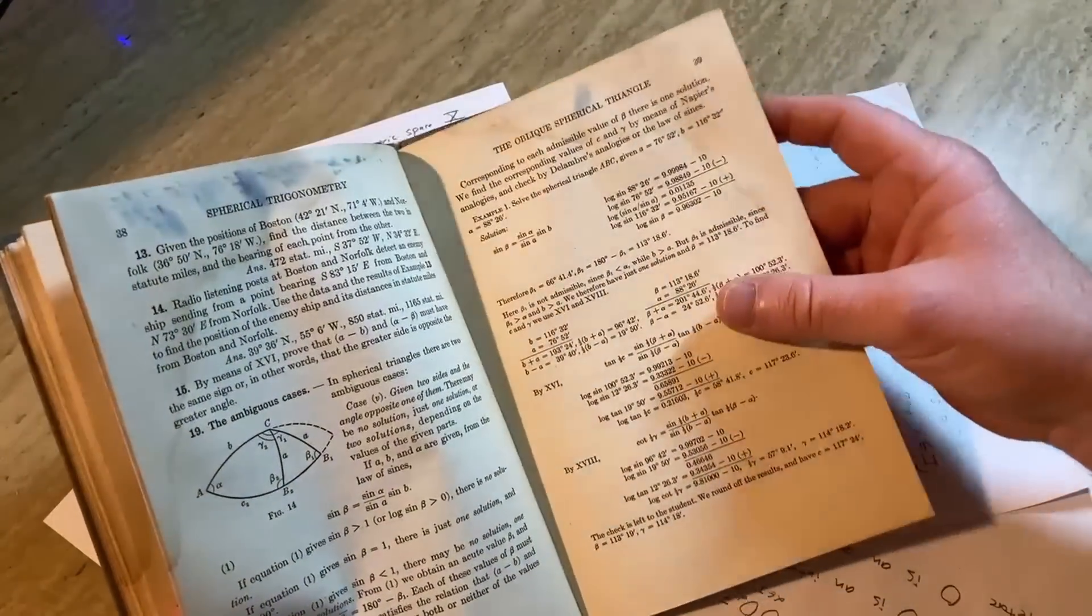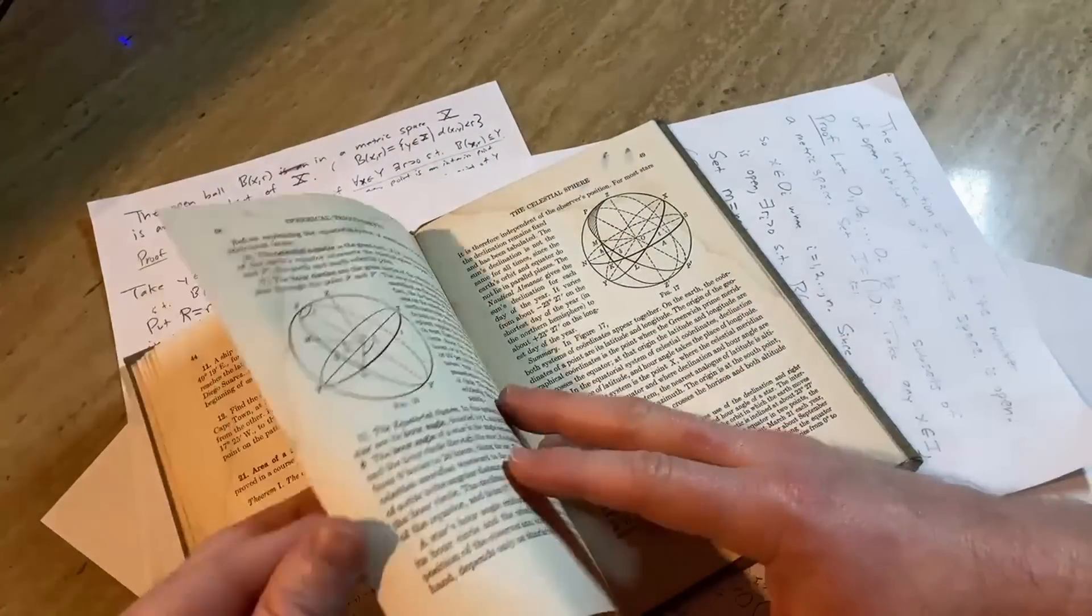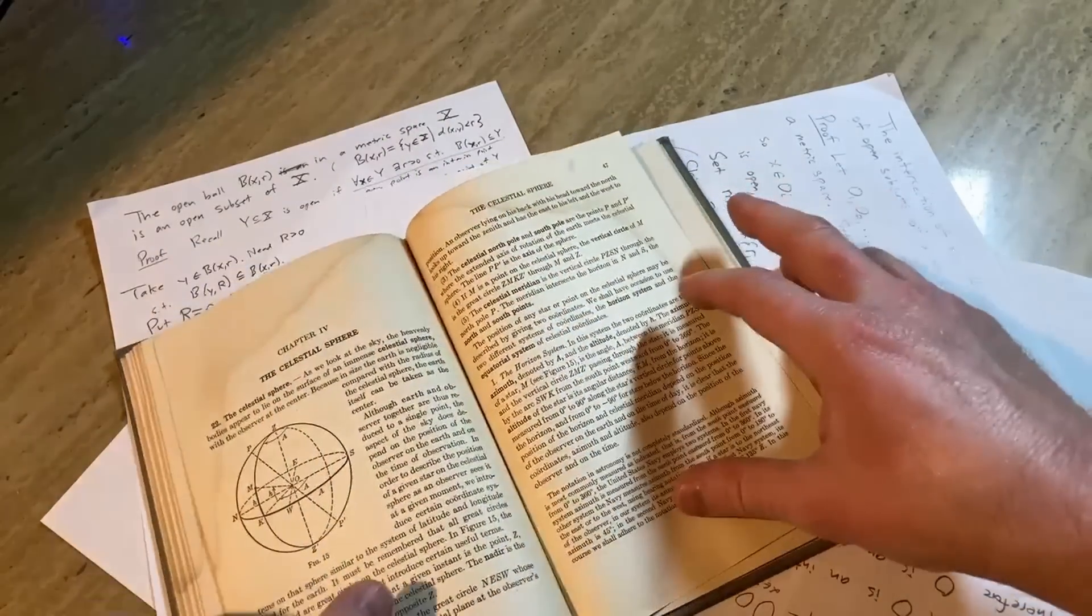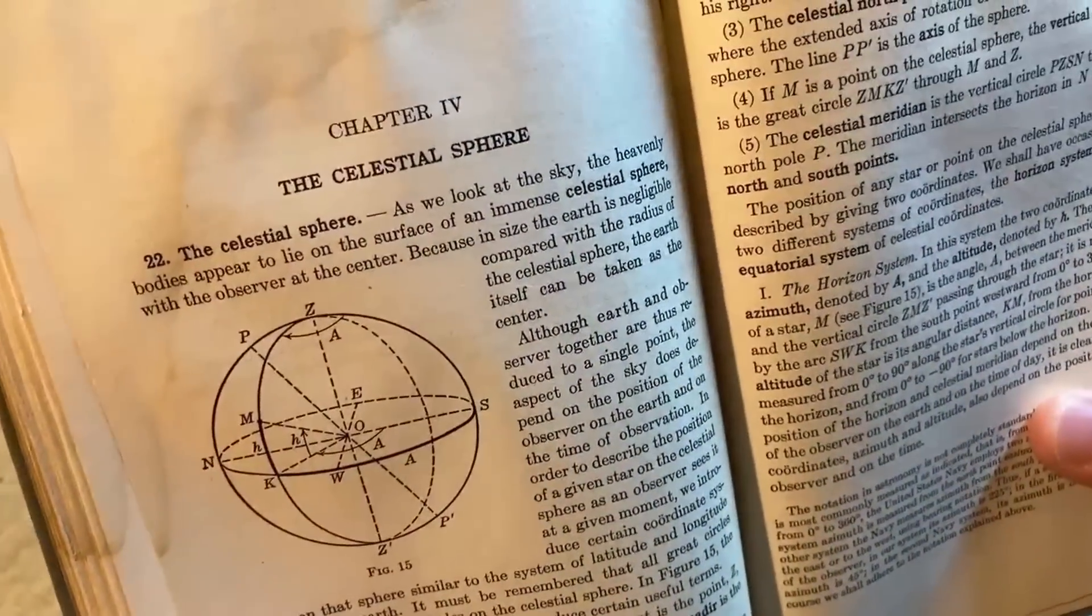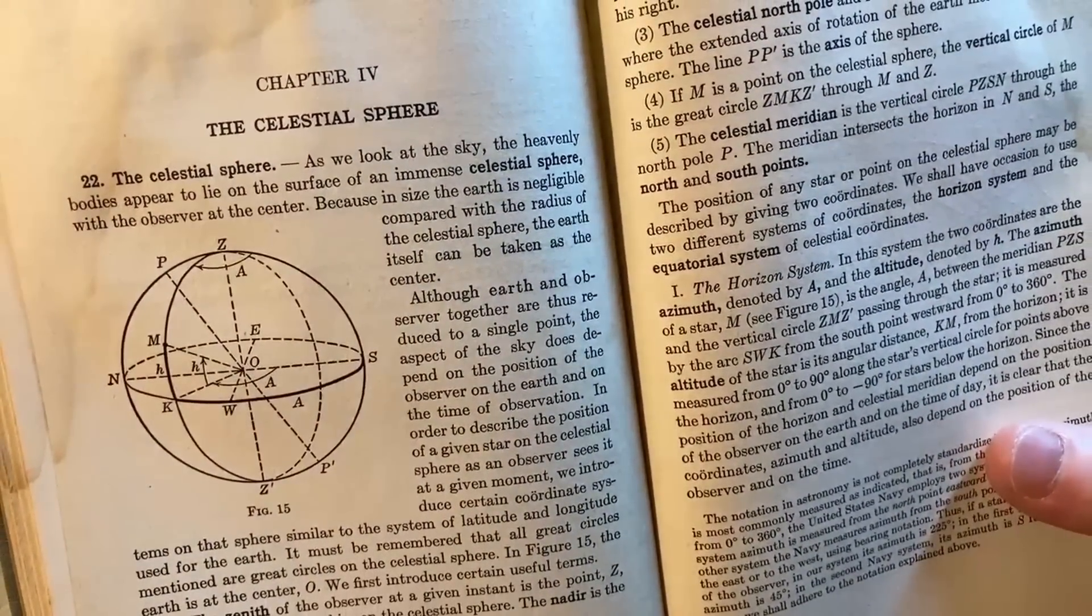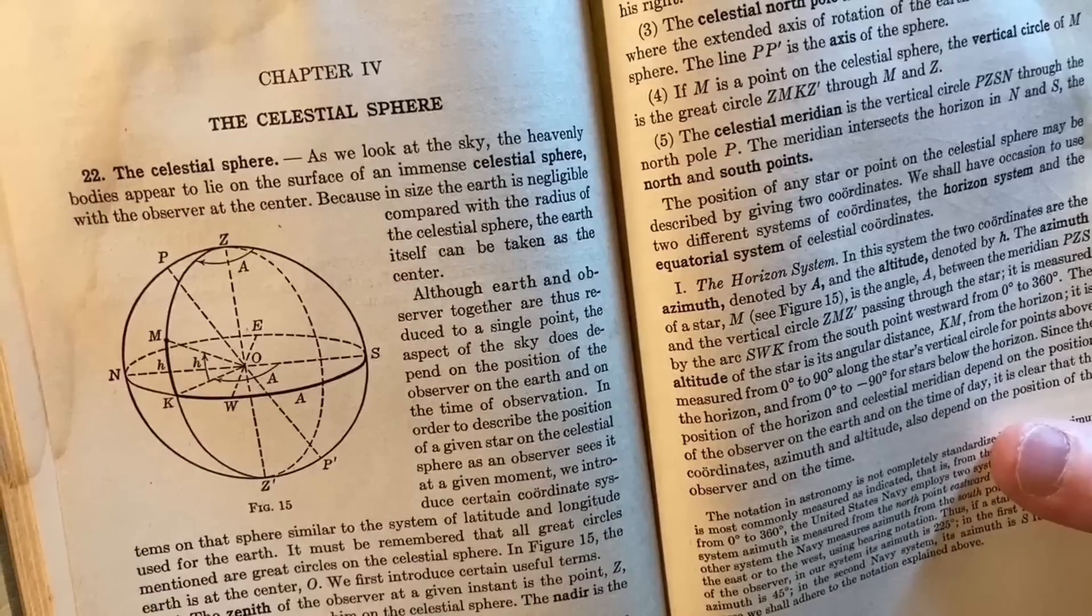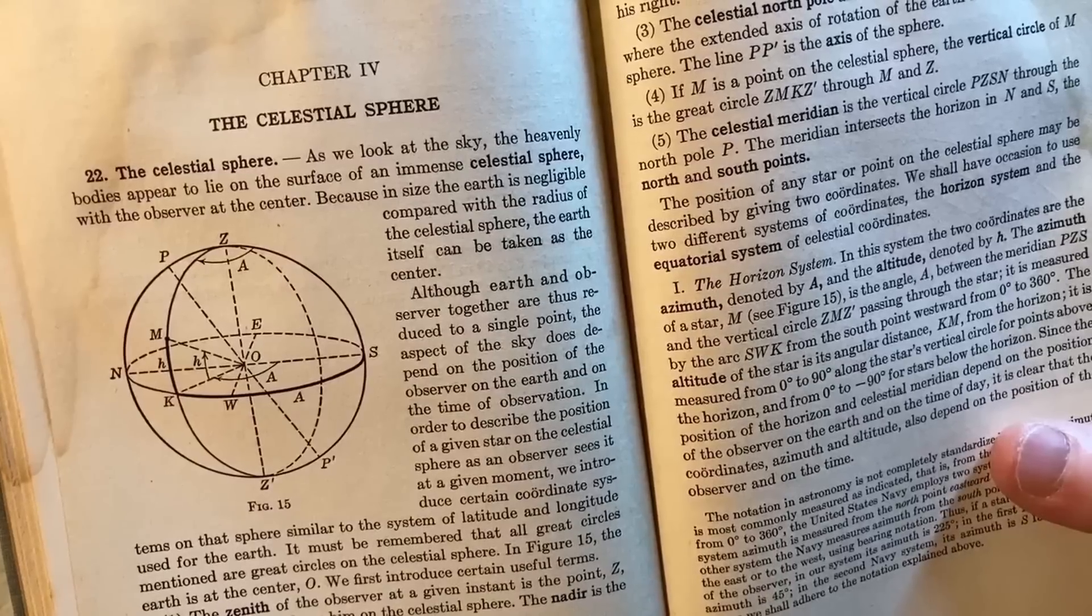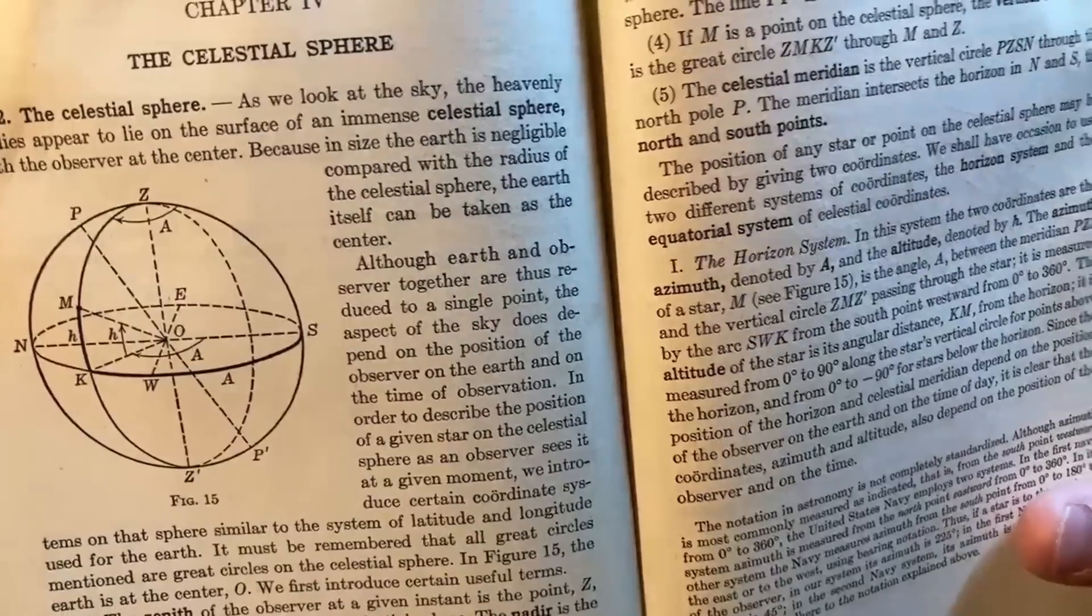Oh really, a lot of damage there in the book. The celestial sphere. Wow, that looks really intense. It's like chapter four. The celestial sphere. As we look at the sky, the heavenly bodies appear to lie on the surface of an immense celestial sphere with the observer at the center. Because in size the earth is negligible compared with the radius of the celestial sphere, the earth itself can be taken as the center. Wow, isn't that cool?